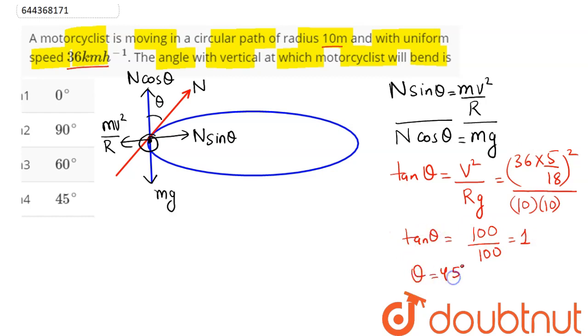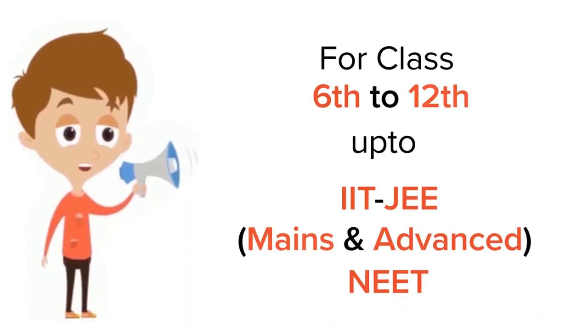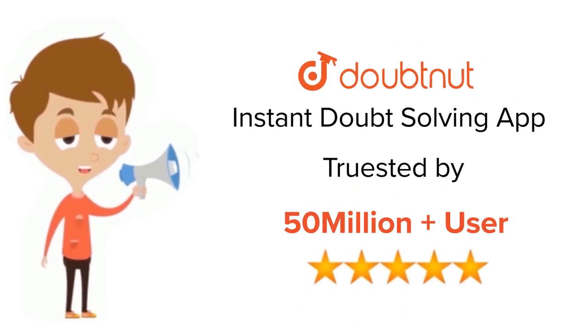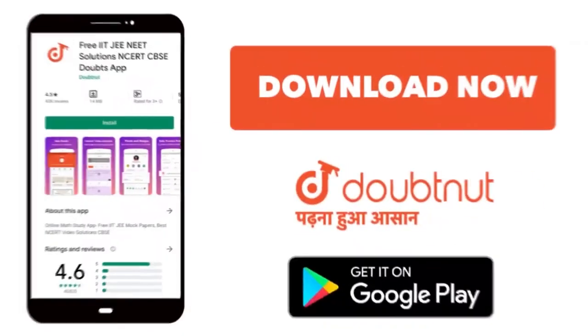And tan θ = 1 means θ = 45°. The motorcyclist will bend at 45° so that he does not skid his bike when turning. Hence option 4 is the correct answer. For class 6 to 12, IIT-JEE and NEET level, trusted by more than 5 crore students, download Doubtnet app today.